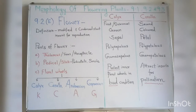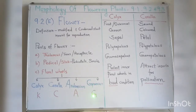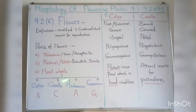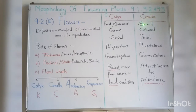These floral whorls are denoted as: calyx = K, corolla = C, androecium = A, and gynoecium = G. These floral whorls are developed from and are present on the thalamus. Now let's look at the first two floral whorls: calyx and corolla. Calyx is the first or outermost floral whorl, while corolla is the second floral whorl.